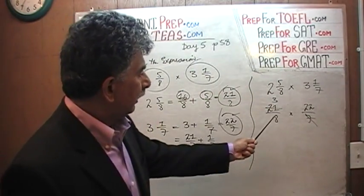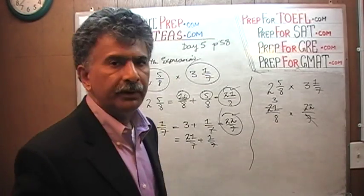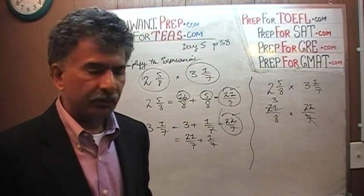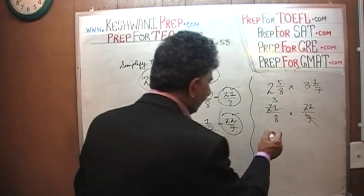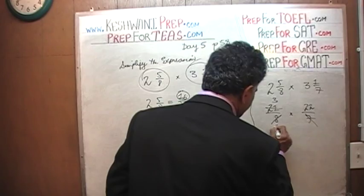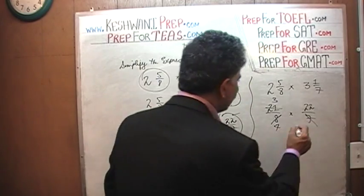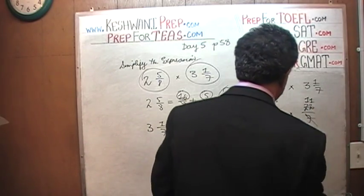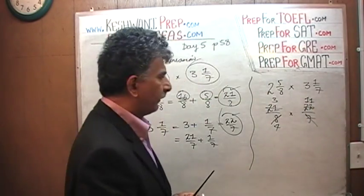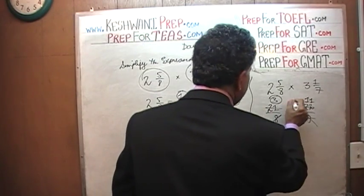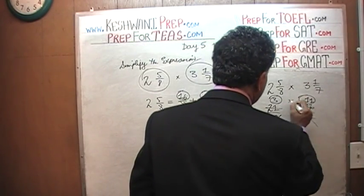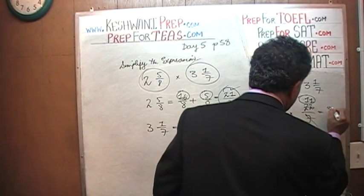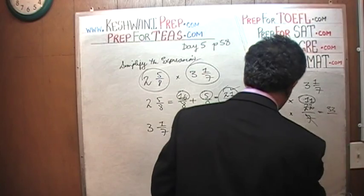Similarly, we see an even number on top and an even number on the bottom. Let's divide top and bottom by 2. Eight divided by 2 gives us 4, and 22 becomes 11. So we end up with 3 times 11, which is 33, over 4.